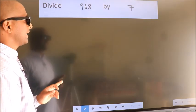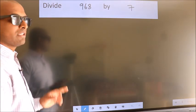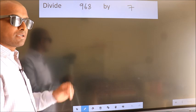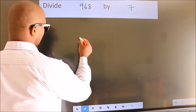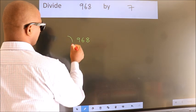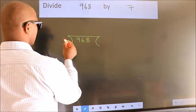Divide 968 by 7. To do this division, we should frame it in this way: 968 here, 7 here.